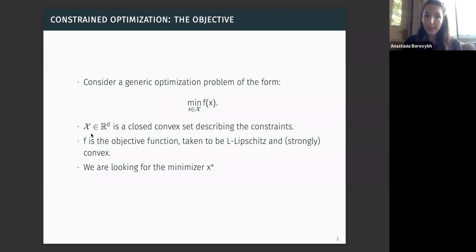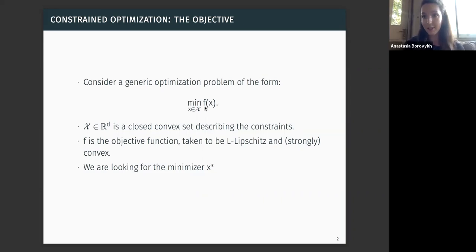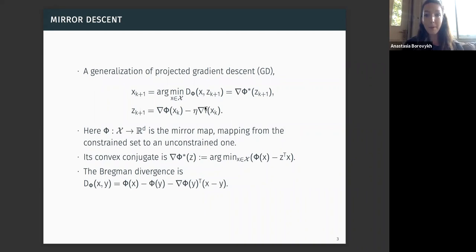The setting we work in is constrained optimization. Our objective is to minimize some function f of x, where f is the objective function taken to be a strongly or irregularly convex function. We have a constraint set curly X, so our optimization objective is to minimize f(x) such that x lies in our constraint set curly X, and we're looking for the minimizer x star. The optimization algorithm we use for this is mirror descent, which is a generalization of projected gradient descent.